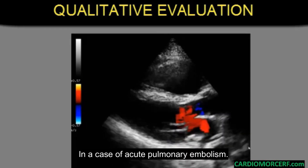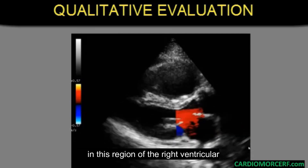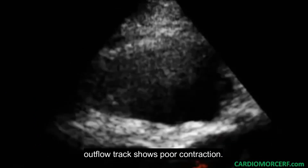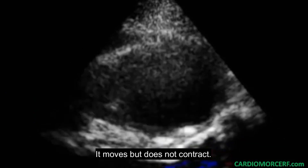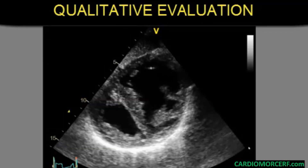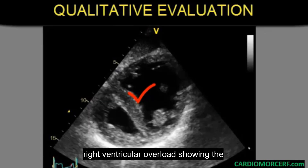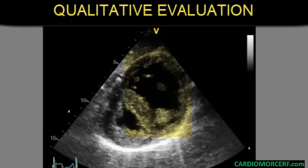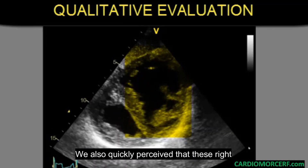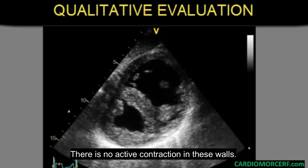In a case of acute pulmonary embolism, we saw that the right ventricular wall in this region of the right ventricular outflow tract shows poor contraction — it moves, but does not contract. In this patient with a critical systolic right ventricular overload, showing the characteristic flattening of the interventricular septum, we also quickly perceived that these right ventricular walls are not thickening normally.